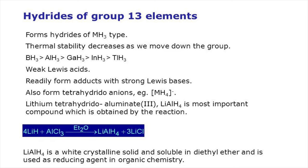Next we consider the formation of hydrides. Group 13 elements do not react directly with hydrogen but form hydrides of the type MH₃, which can be prepared indirectly. The stability of the hydrides decreases as we move down the group, with boron hydride being the most stable and thallium hydride the least stable. Due to their electron-deficient character, the hydrides act as Lewis acids and readily form adducts with strong Lewis bases. They also form trihydrido anions — for example, lithium aluminium hydride is used as a reducing agent in organic chemistry. Today we discussed the general characteristics of the boron family; in the next part we will discuss the Lewis acidity of boron halides.